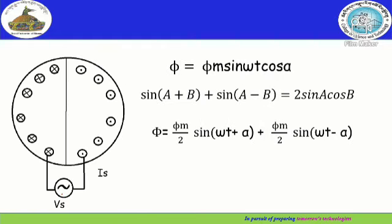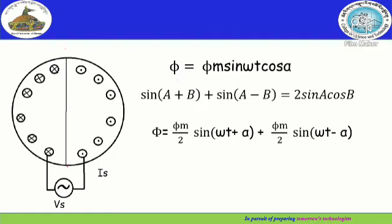For the given diagram, let us assume that a single-phase supply of VES is given to the conductor part of the stator. As a result, a current of magnitude IS is induced and flows through this direction. Due to the flow of current in the conductor part of the stator, magnetic flux Phi is induced. Applying the right-hand rule to the given diagram, we get the direction of the main field flux Phi_X with respect to the stator axis.